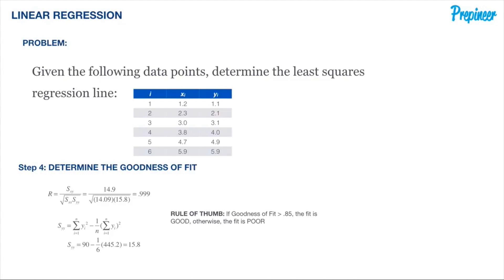Our goodness of fit exceeds 0.85, meaning the fit is good — it's actually nearly a perfect straight line. This means that the equation we have derived to represent the data can be reliably used to predict across other inputs.